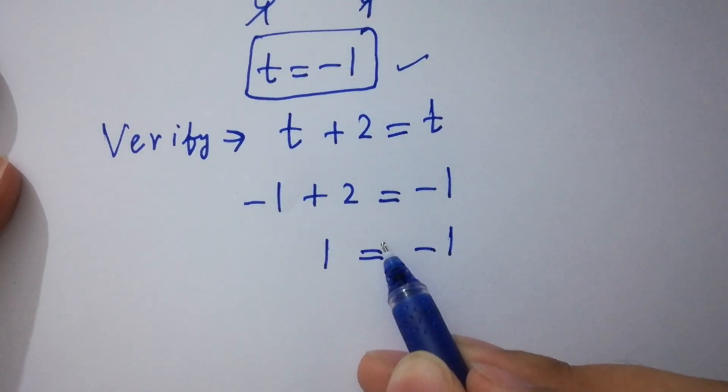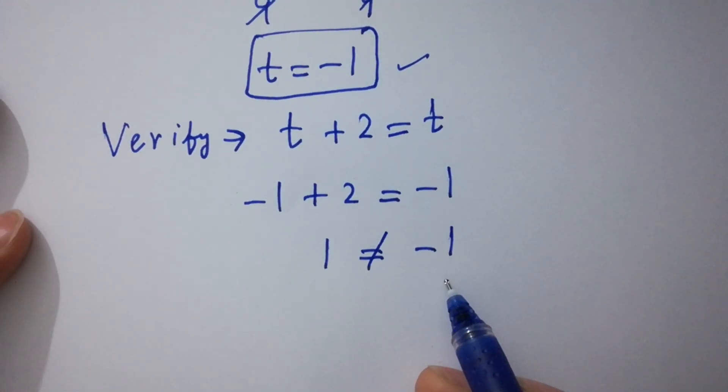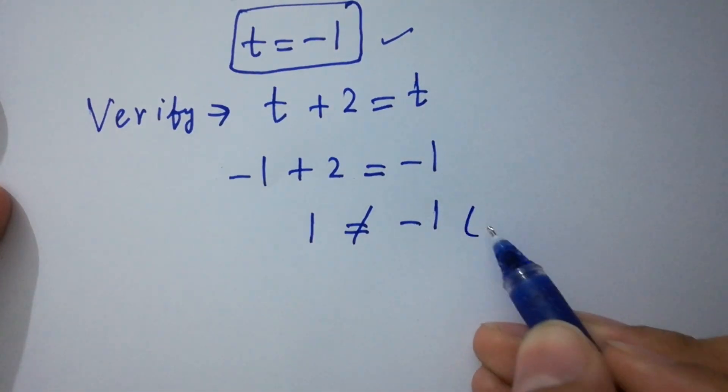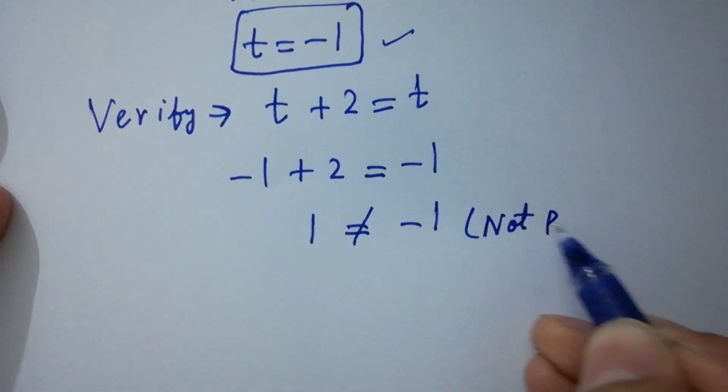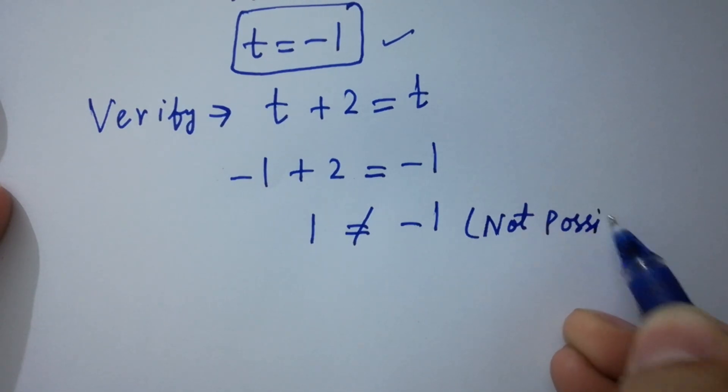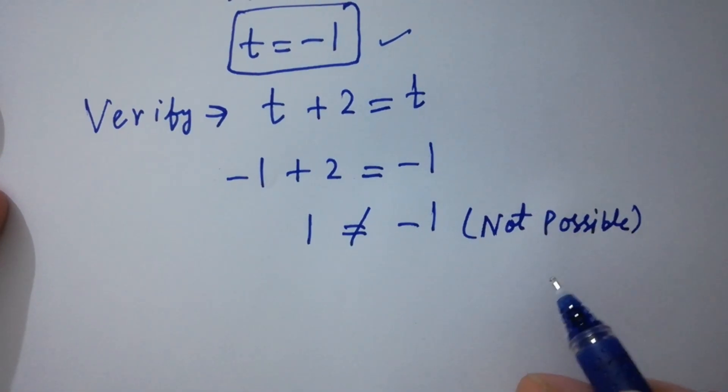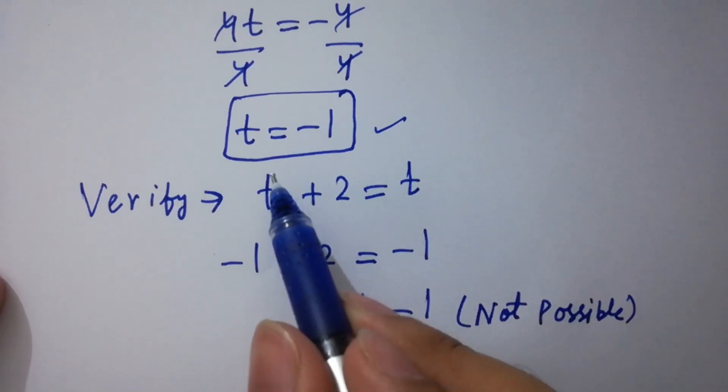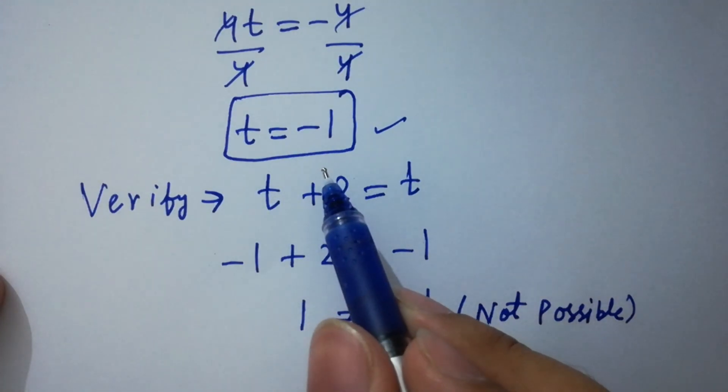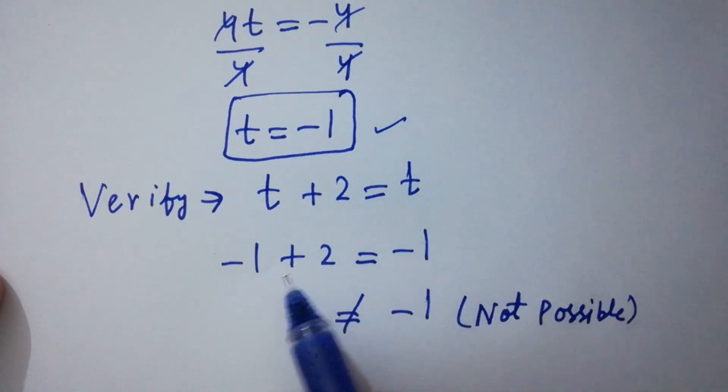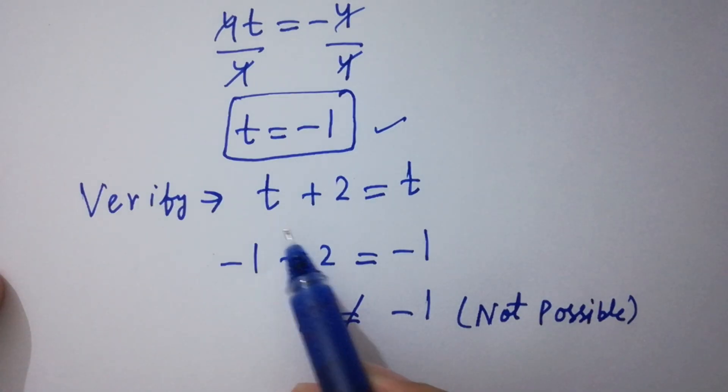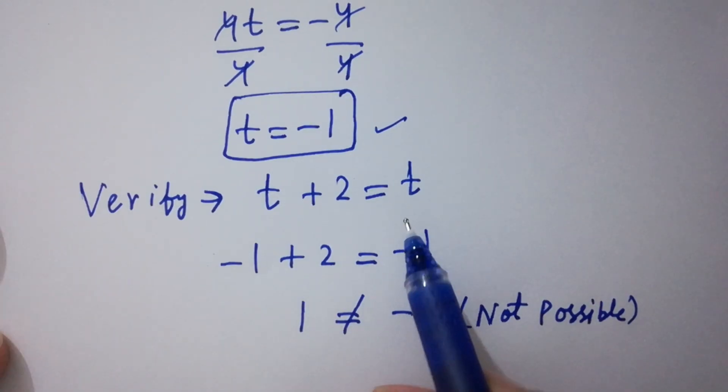Minus 1 plus 2 we have plus 1 equal to minus 1. 1 does not equal to minus 1 which is not possible. Which shows that the value of t equal to minus 1 does not satisfy the equation of t plus 2 equal to t.